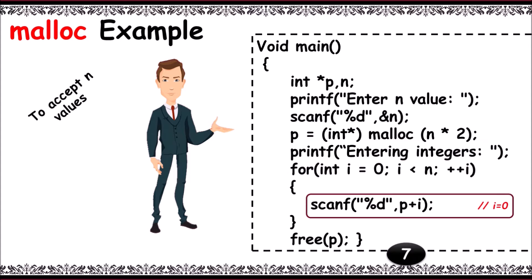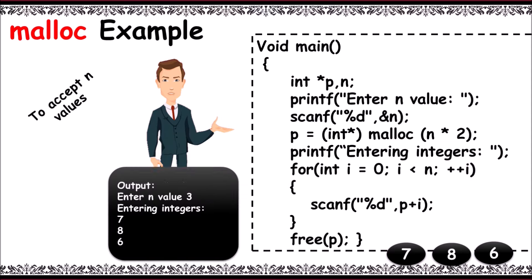Entering 7 into p plus i, that is p plus 0 address. Next, 8 to p plus 1 address, and next 6 to p plus 2 address. Loop ends. Next, free of p. It is used to deallocate the memory of p, and you can view the output.